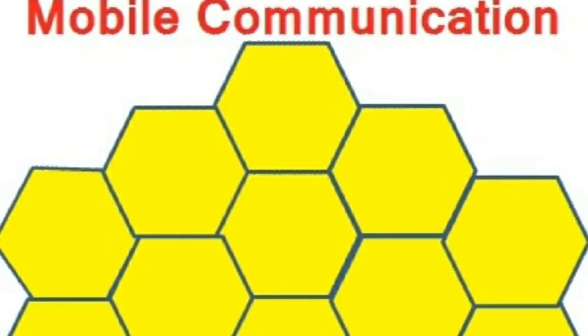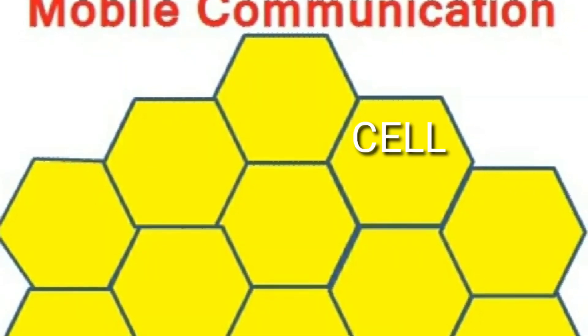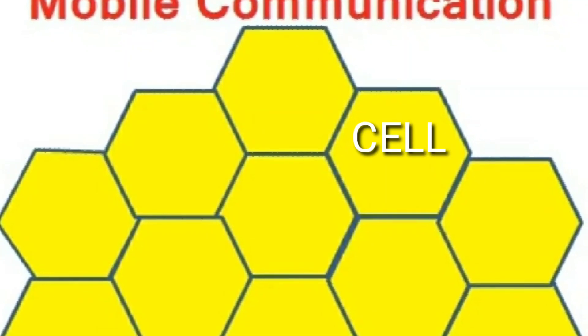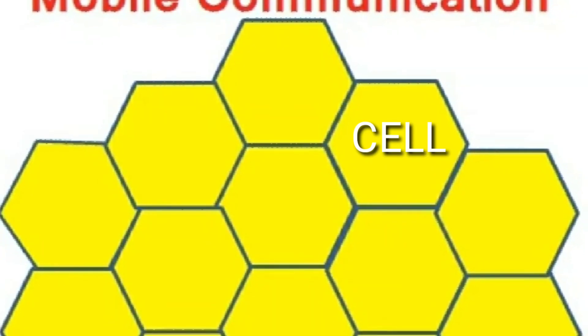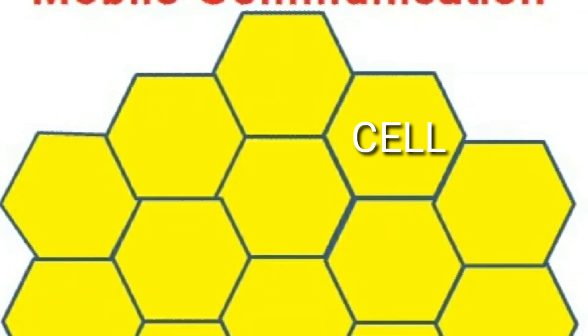These cells are hexagonal in shape. We have to take a look at the hexagonal shape. Now, we also have a circular shape. We have a circular shape within a circular shape. We will take a look at the hexagonal shape.